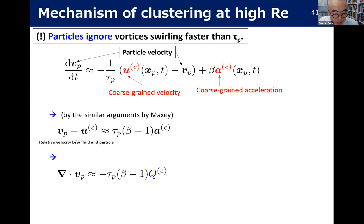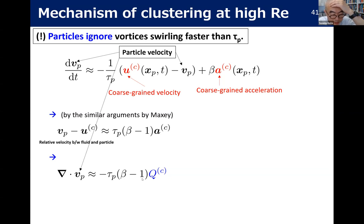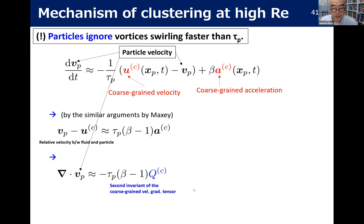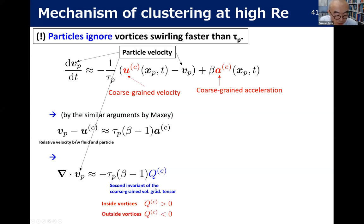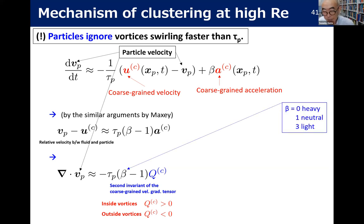After thinking about this for 10 years I realized the phenomenon is very simple. The particle ignores vortices swirling faster than τp — because for smaller-scale eddies swirling faster, a particle of given timescale τp cannot follow the small-scale motion. So the equation for that particle can be written by coarse-graining the velocity and acceleration at the scale corresponding to τp. We have conducted simulations with coarse-grained turbulence and found no qualitative difference from real simulation. The equation is now written in terms of the coarse-grained field, and we can use the classical Maxey argument: the relative velocity between fluid and particle gives a divergence of particle velocity approximately equal to −τp(β−1)Q_C, where Q_C is the second invariant of the coarse-grained velocity gradient tensor.